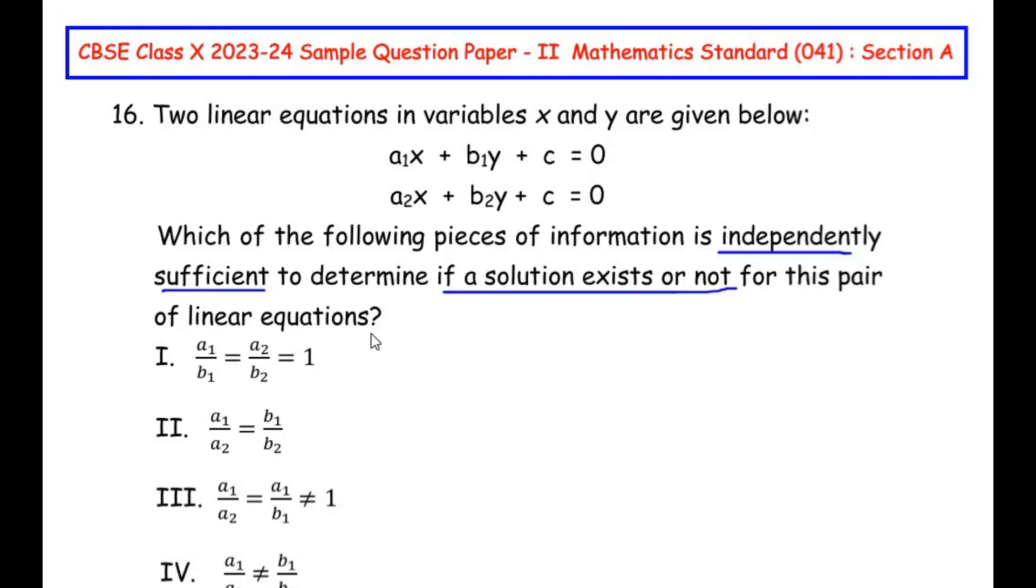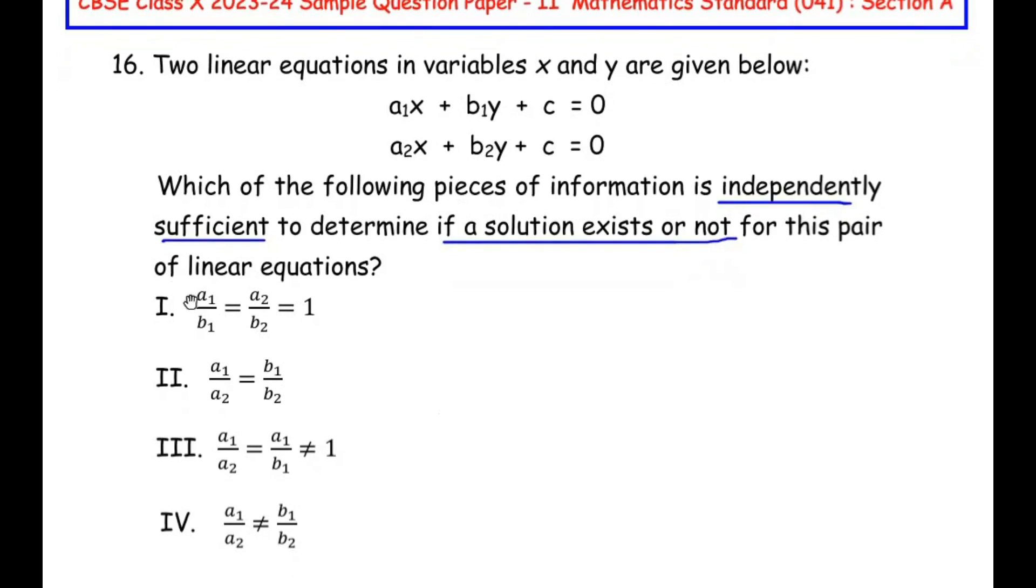We can see there are four given options, so we have to choose which of the option is a right fit for the given two lines. To solve this, we need to know the condition for intersecting lines, coincident lines, and parallel lines.